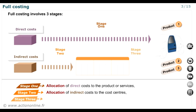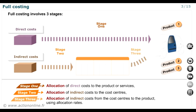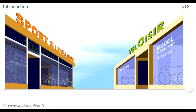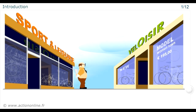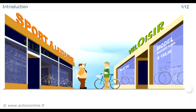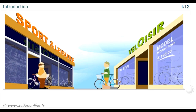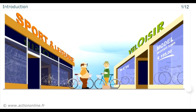Third stage: allocating indirect costs to each product or service. You are a senior manager in a company that manufactures all types of bicycles — mountain bikes, trail bikes, road bikes, etc. A competitor launches a woman's city bike on the market at 195 euros excluding VAT.